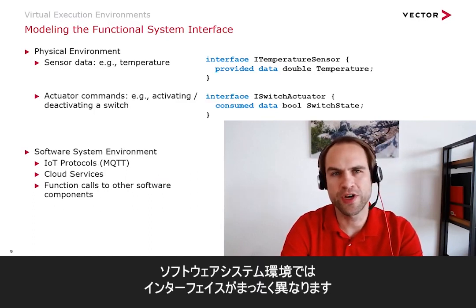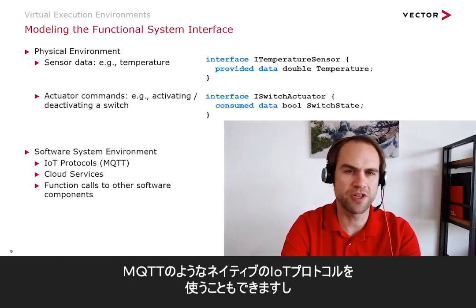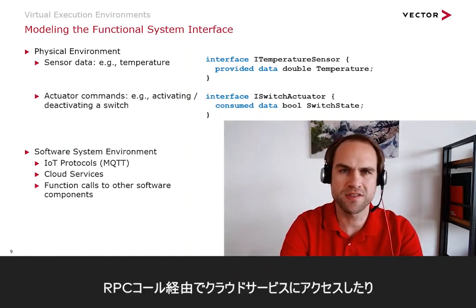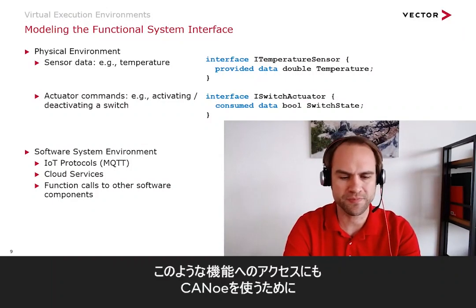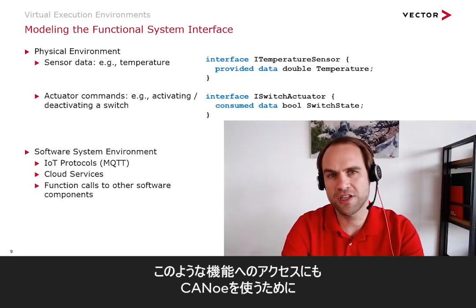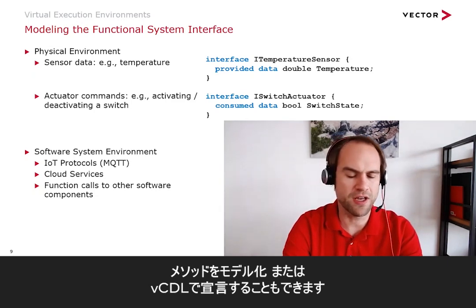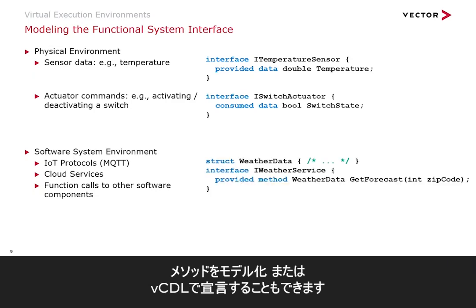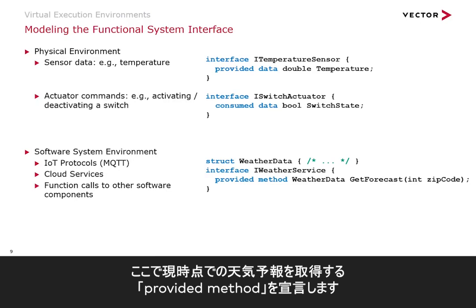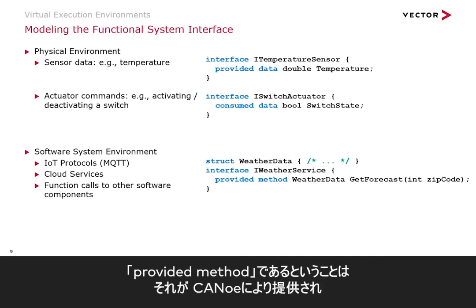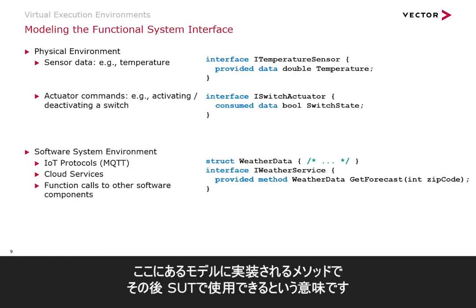In the software system environment, we have very different kinds of interfaces. We can have native IoT protocols such as MQTT, access some cloud service via an RPC call, or function calls in general to any other software component. To access this functionality also with Canoo, we have the ability to model and declare methods with the VCDL. For example, if your IoT device wants to access some weather service, we can declare here a provided method that gets the current weather forecast. Since it's a provided method, it means Canoo will provide and implement it in a model, and then it can be used in your SUT.